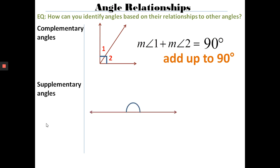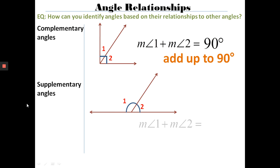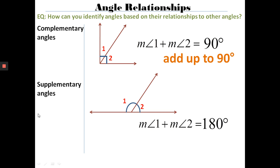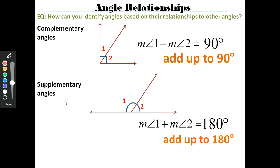Supplementary angles — when you put them together, look at this straight angle right here. We all know that it's 180 degrees. When I cut this into two angles, I still know that those two angles add up to 180 degrees. Since the measurement of angle one and angle two equal 180 degrees, I know that they are supplementary.